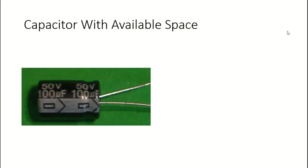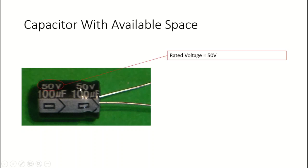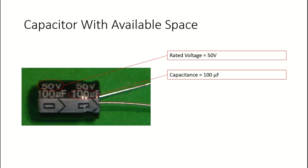When a capacitor is large enough, it's easy to show the important characteristics on the outside. For example, let's take a look at this capacitor here. You'll notice there are some numbers and letters written on it. You can see 50V, which stands for the rated voltage - the maximum voltage that should be across the capacitor's legs. In addition, the capacitor also has 100 microfarads, which is the amount of capacitance. You'll also notice a little negative sign, which indicates that this capacitor is bipolar, or sometimes called polarized.